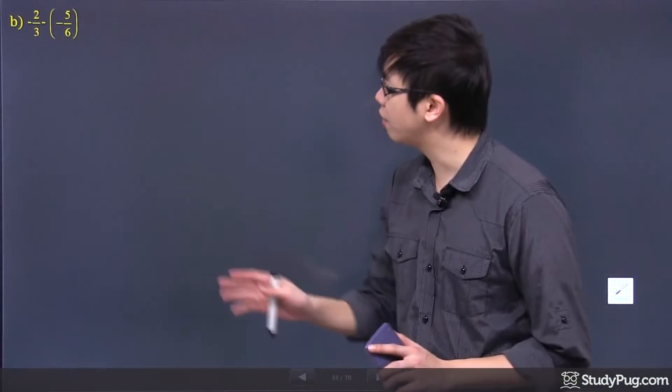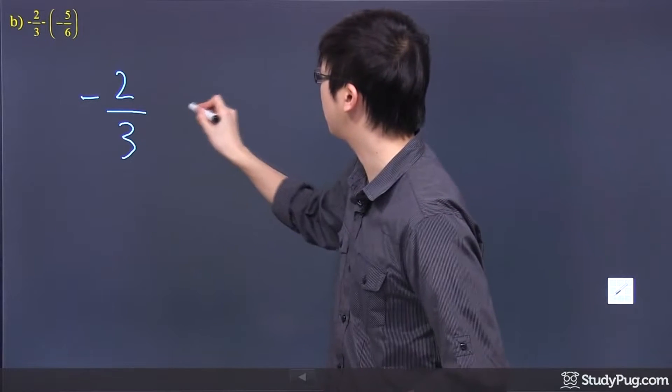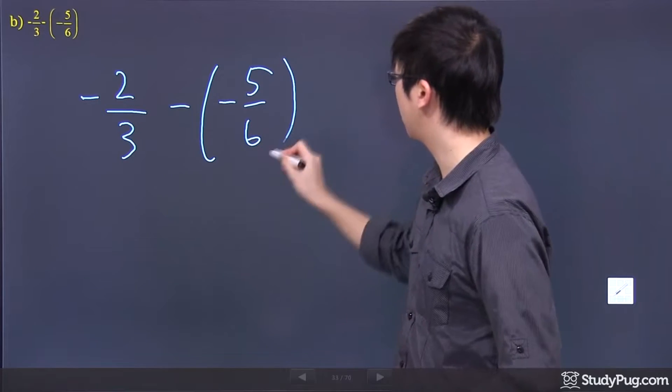Hi. Welcome to this question right here. So we have negative 2 over 3. Now, let me just rewrite that question down right here. Subtract a negative 5 over 6, okay?